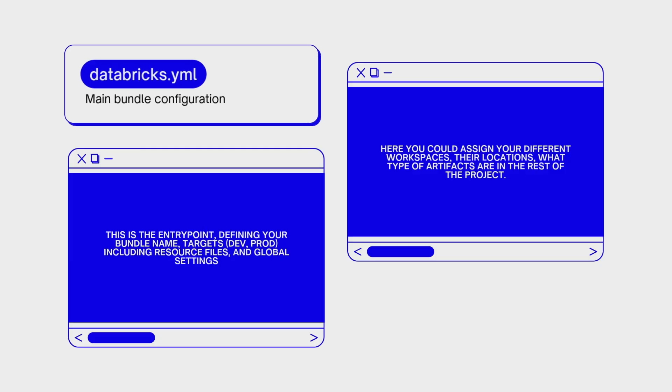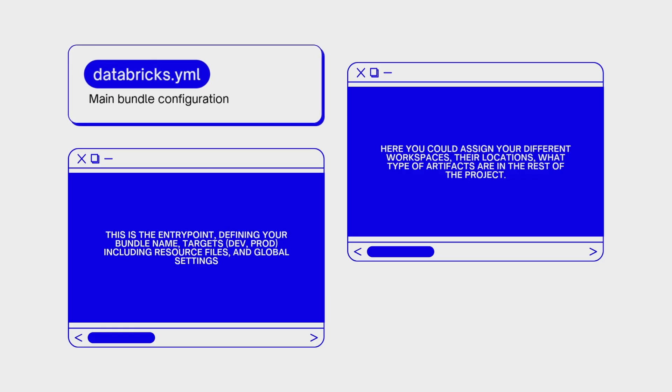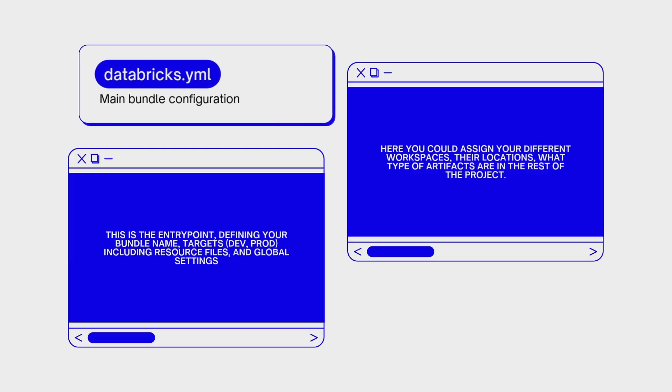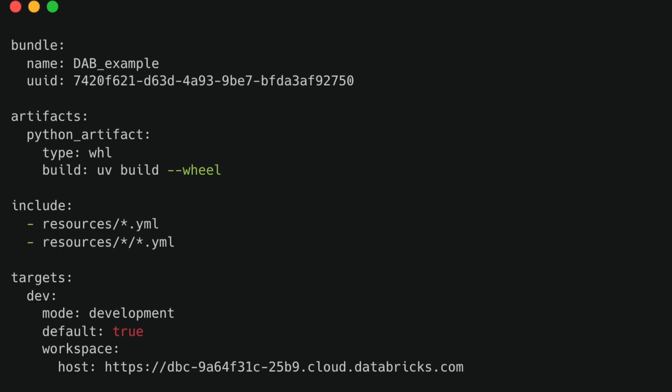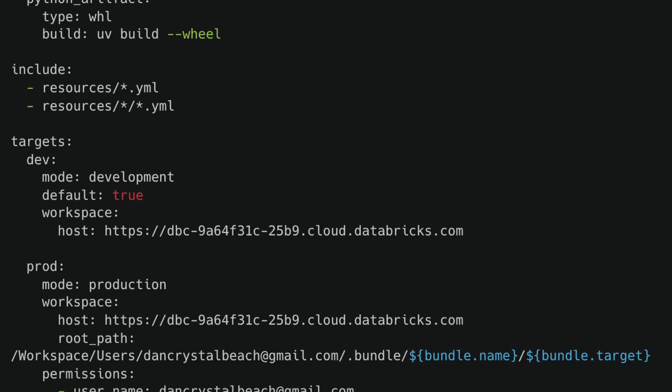Let's dive into the main `databricks.yaml` file. For a Databricks asset bundle, this is the main configuration file. This is where you can point to different workspaces — maybe dev and prod environments — and include other artifacts and resources from the rest of the project. Here's an example of a simple `databricks.yaml` from the init command we ran, showing how you can target different environments like dev and prod.